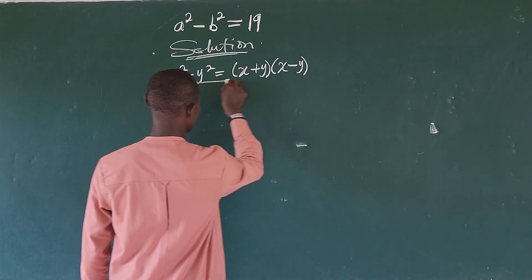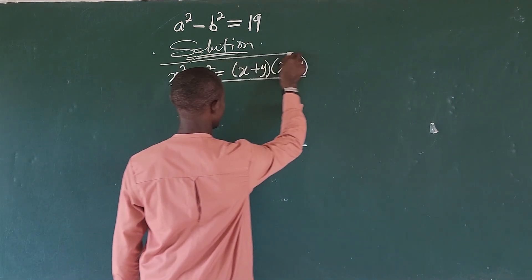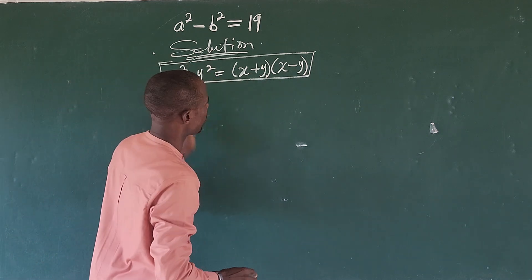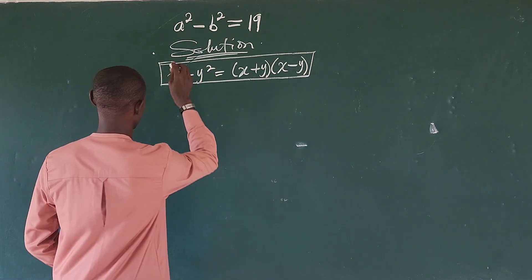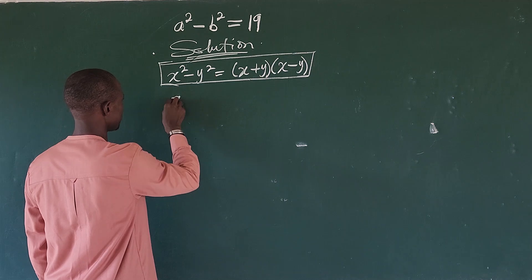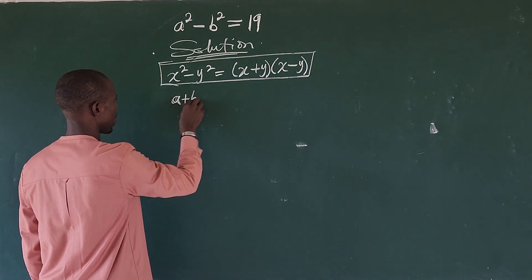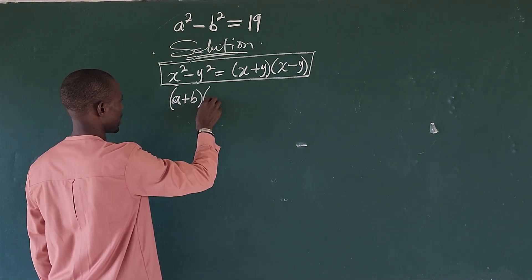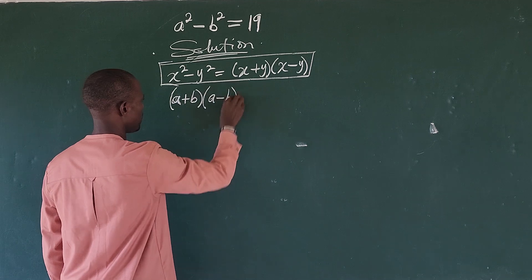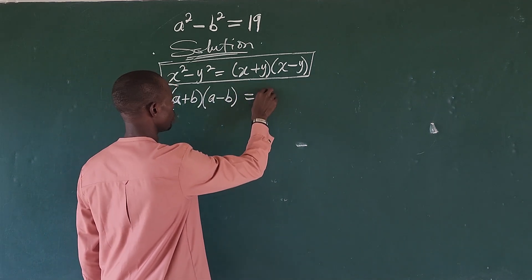So with this difference of 2 squared in mind, let's rewrite the left hand side of our question. So this could be written as (a+b)(a-b) = 19.